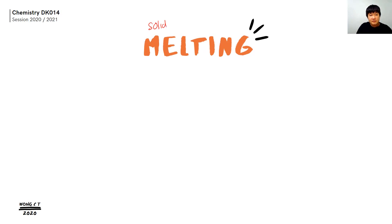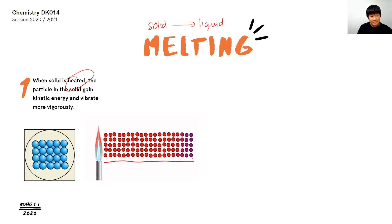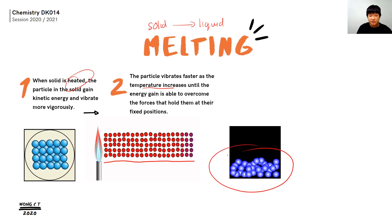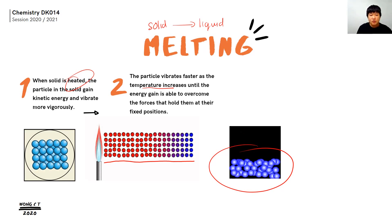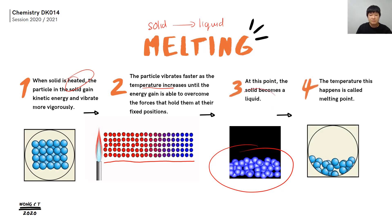Let's start with melting. Melting is a process where solid becomes liquid — it is a heating process. When the solid particle is heated, the kinetic energy increases and the solid particle starts to vibrate and rotate faster. As the temperature keeps rising, the particle absorbs more energy and vibrates even faster, up to a point where the solid particle has enough energy to overcome the strong inter-particle forces, and the solid particles move further apart, becoming liquid.